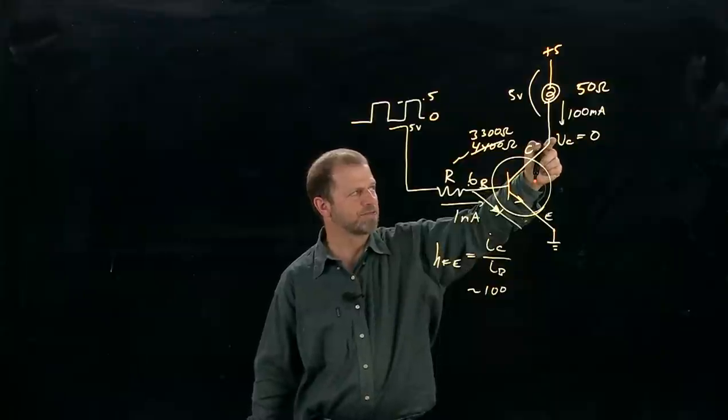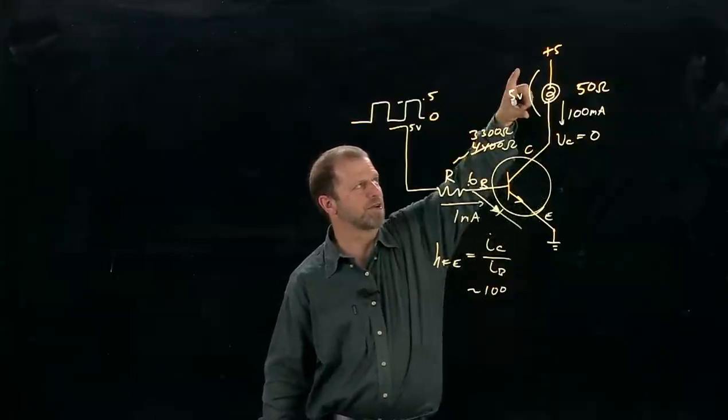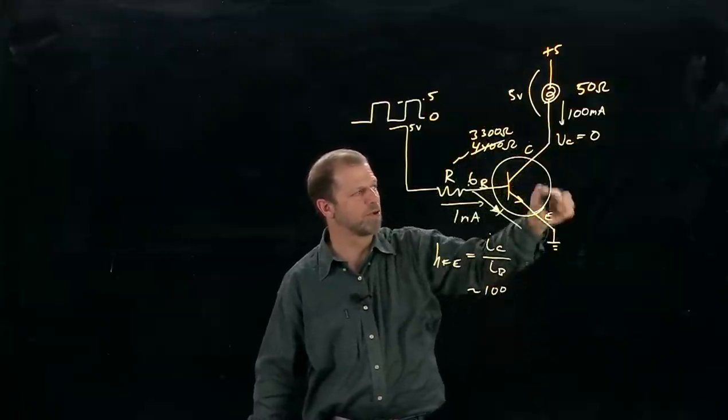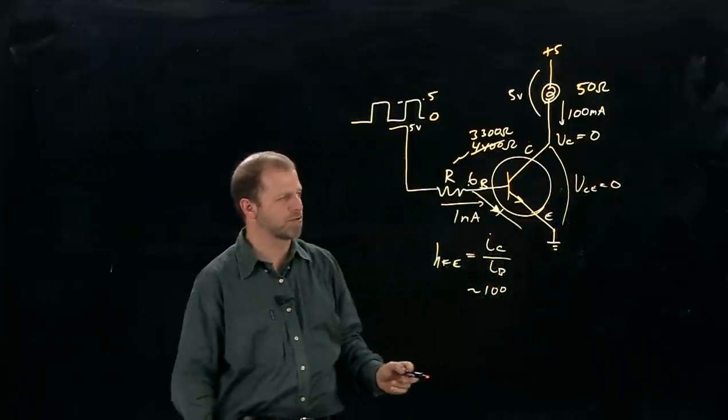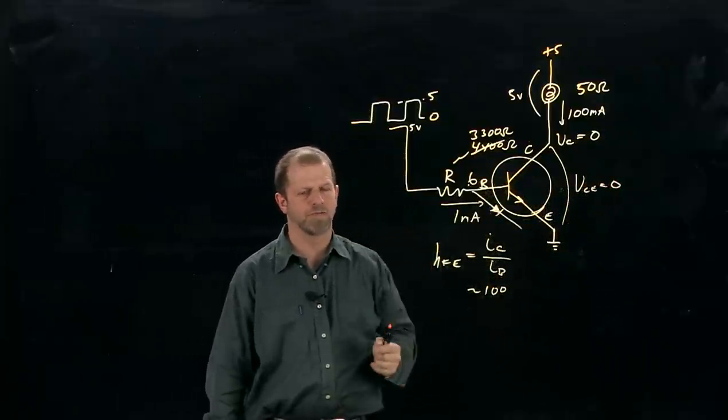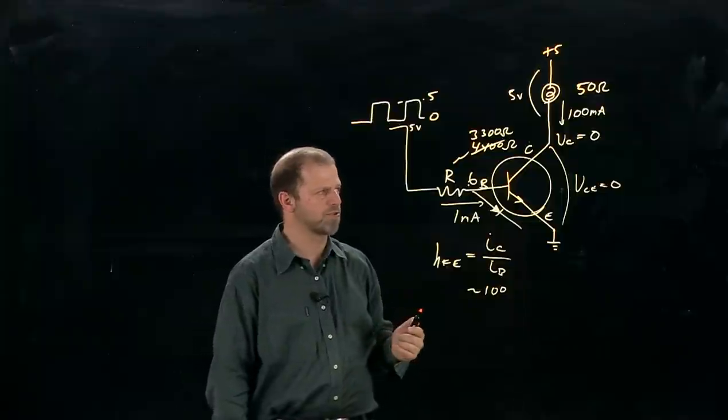The collector current can't get bigger than 100 milliamps no matter what, because 100 milliamps is enough to make five volts across the light bulb. Zero volts VCE is now zero volts left across the transistor. That's as low as the voltage across the transistor can ever go.